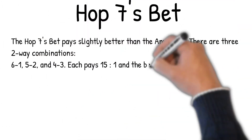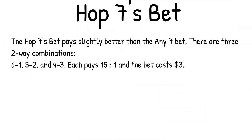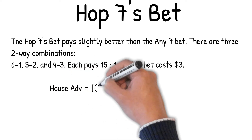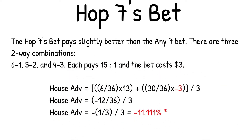The Hop Sevens bet pays slightly better than the Any Seven bet. There are three two-way combinations — six-one, five-two, and four-three — each paying 15 to one, and the bet costs three dollars. House advantage equals six out of 36 chances to throw a seven times a 13 dollar win, plus 30 out of 36 times a three dollar loss, divided by a three dollar bet: minus 12 out of 36 divided by three equals minus one-third divided by three, equals minus 11.111% house advantage.